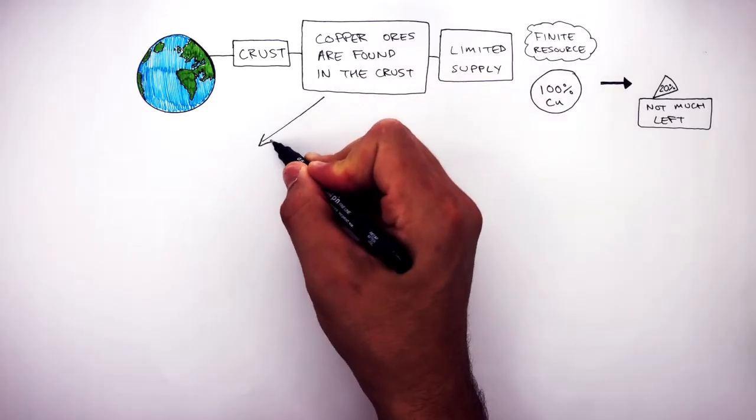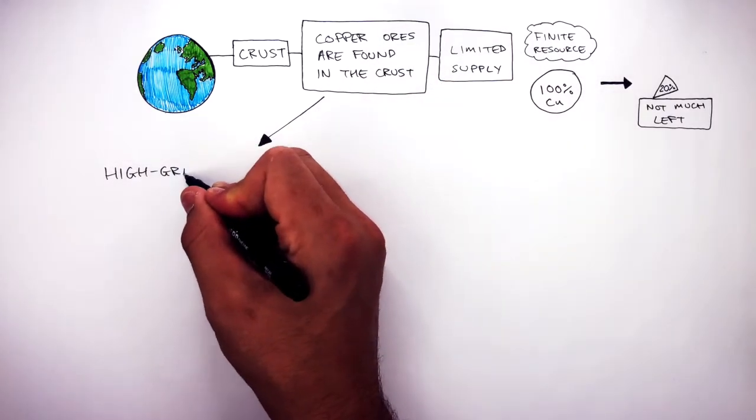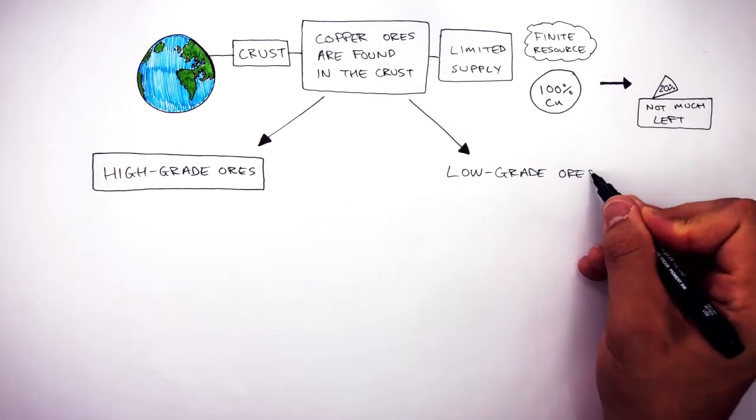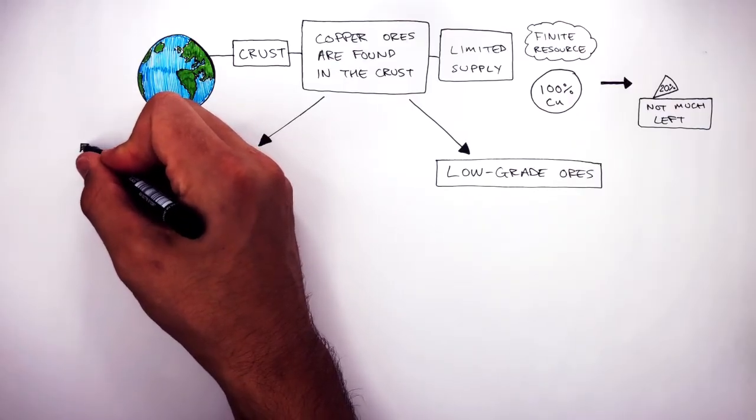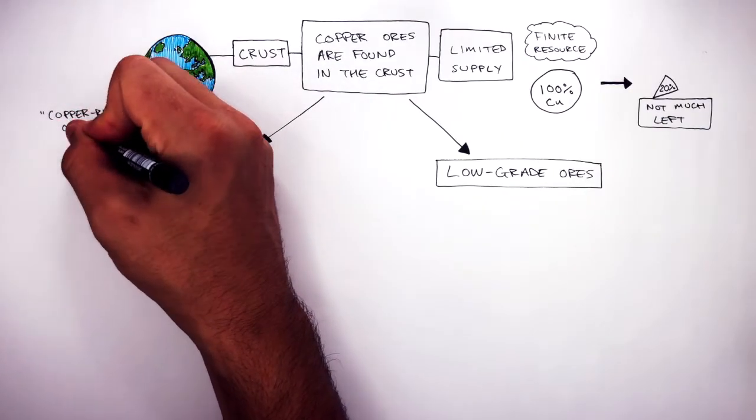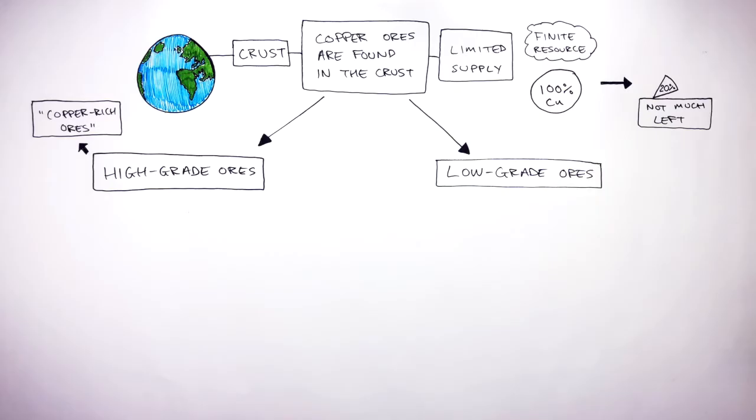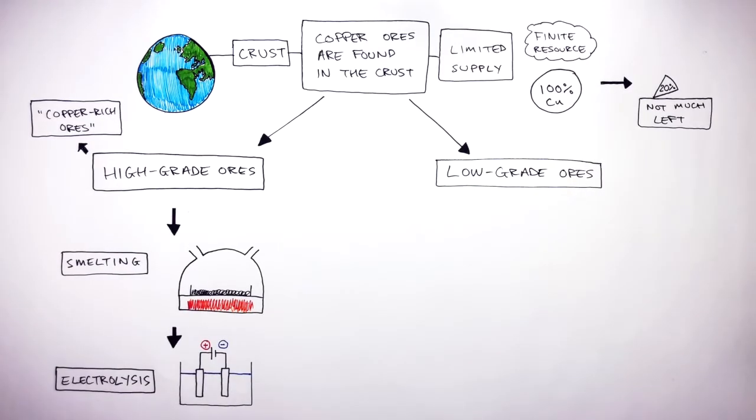There are two types of copper ores: high-grade ores and low-grade ores. High-grade ores are also known as copper-rich ores. High-grade ores are ores which have a high percentage of the metal. For high-grade copper ores, smelting and electrolysis are used to extract the metal.